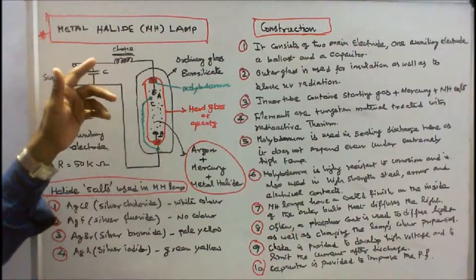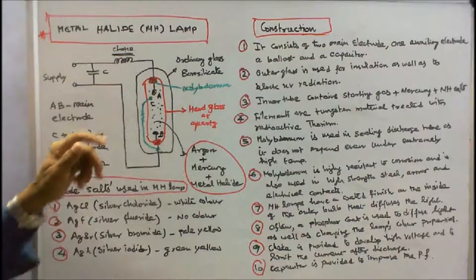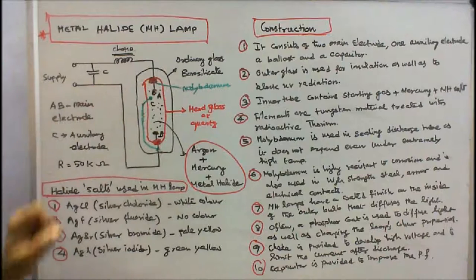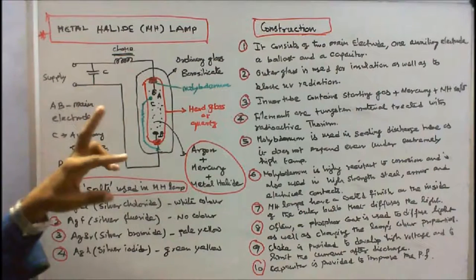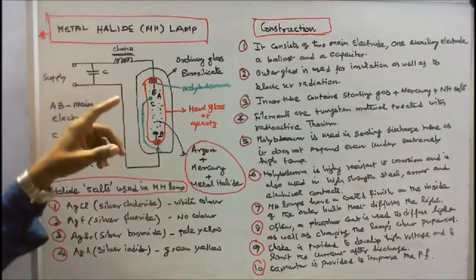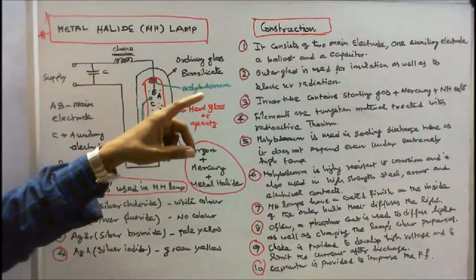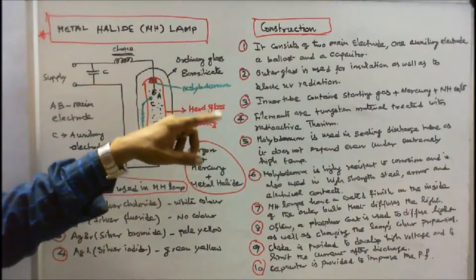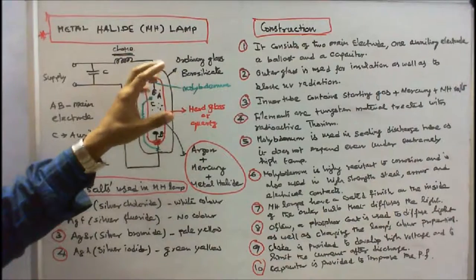And a capacitor. There are two glass tubes. The outer glass is used for insulation as well as to block ultraviolet radiation, which is made up of borosilicate.